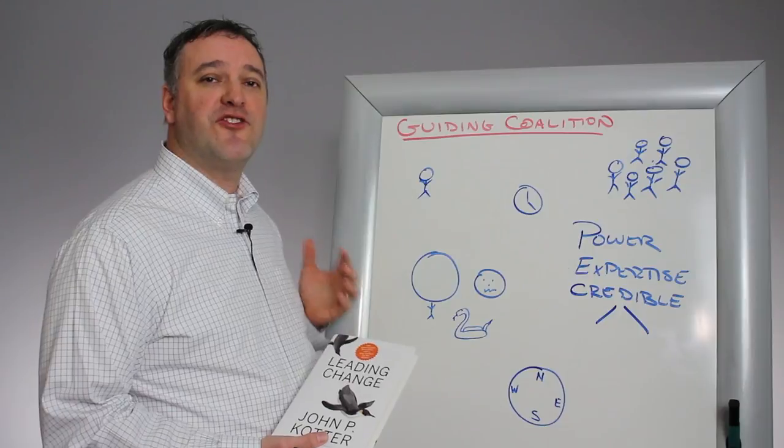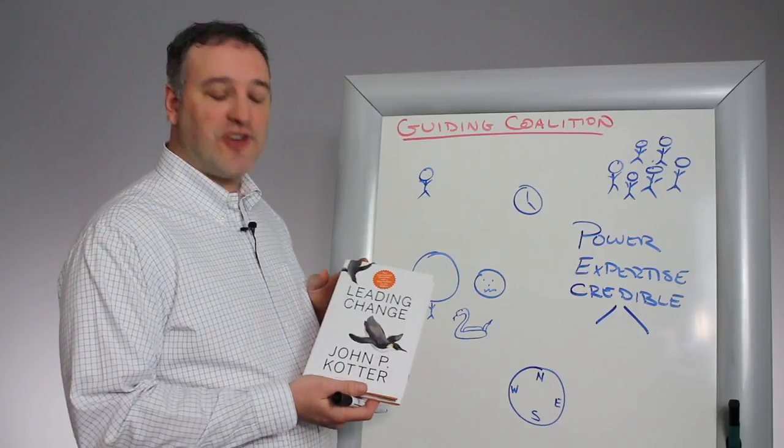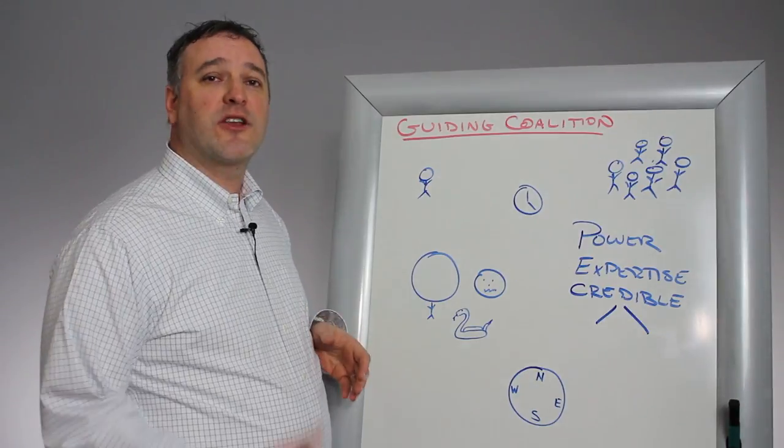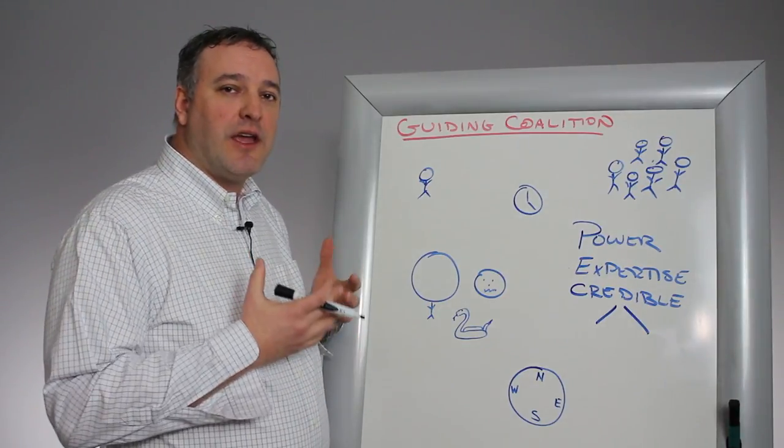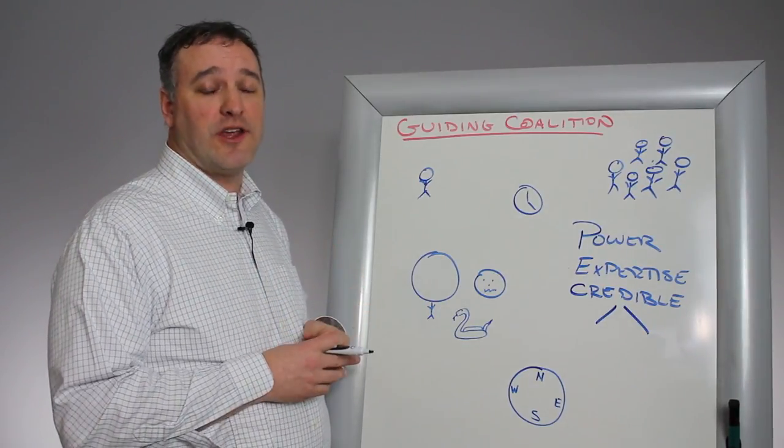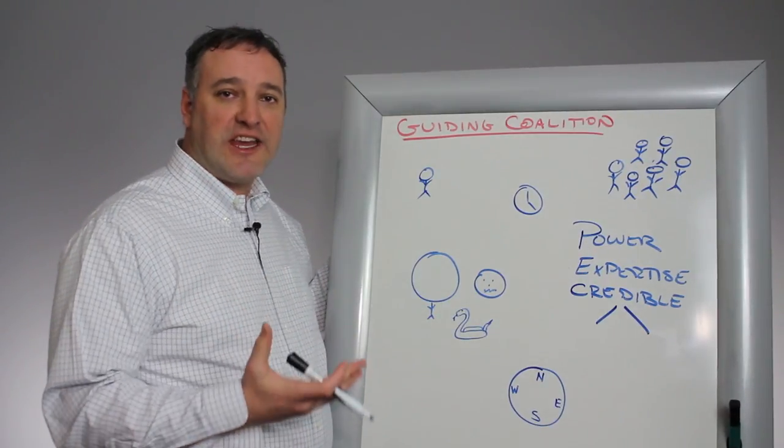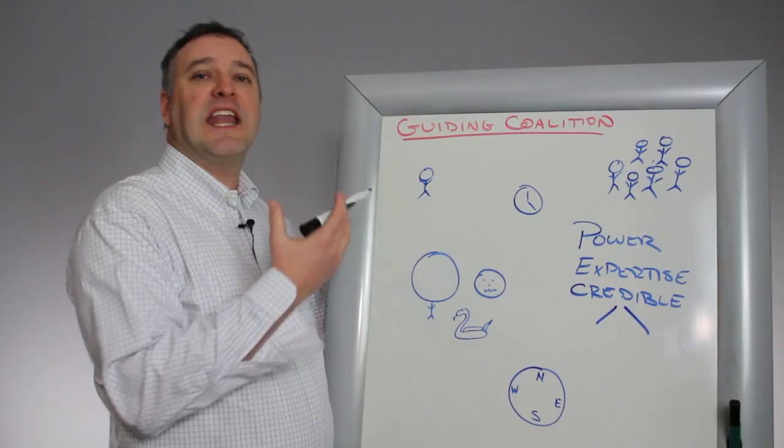Over the last few months we've done a series of HT whiteboards on leading change, based on the book Leading Change by John Kotter. Previously we've talked about the eight-step process that he employs to lead change in organizations. The first step was creating a sense of urgency for your change. The second is to create a guiding coalition.